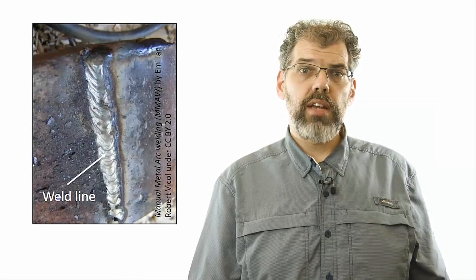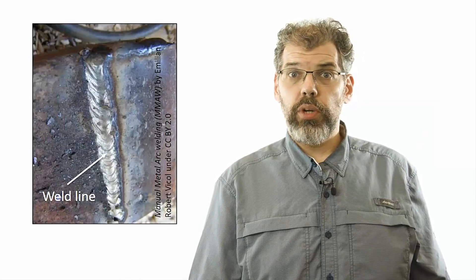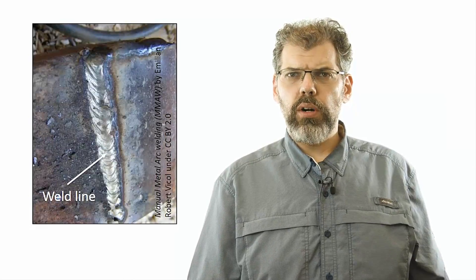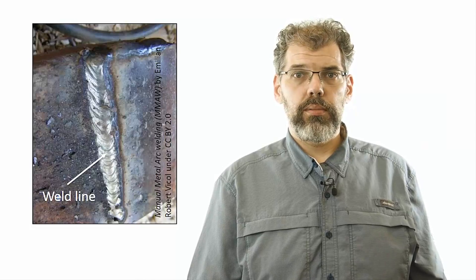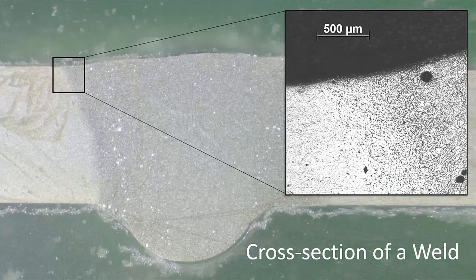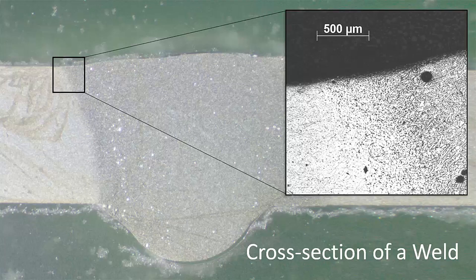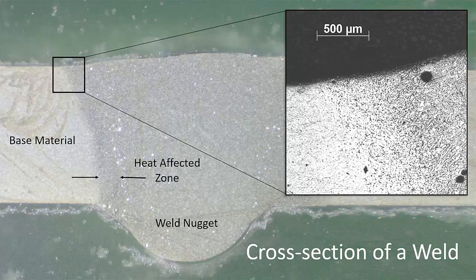Welding processes create visible weld lines where the joining took place. But what are we left with inside these regions? When looking closely at the section of a welded region, different zones in it can be observed: the weld nugget, the heat affected zone, and the base material.